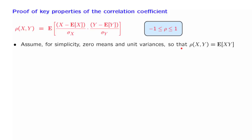We will show that in this special case, the expected value of x times y lies between minus 1 and 1. But the proof of this fact remains valid with a little bit more algebra along similar lines for the general case.